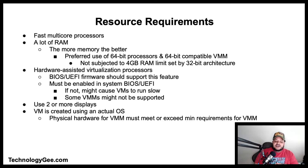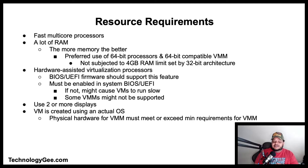The resource requirements for virtualization include fast multi-core processors and a lot of RAM — the more memory the better. You'll need 64-bit processors and a 64-bit compatible VMM, not subjected to the 4 gigabyte RAM limit of 32-bit architecture. Hardware-assisted virtualization processors are also needed; the BIOS/UEFI firmware should support and have this feature enabled, otherwise VMs may run very slowly or some VMMs may not be supported.